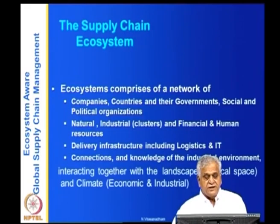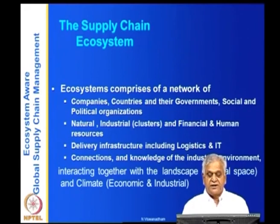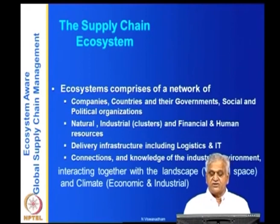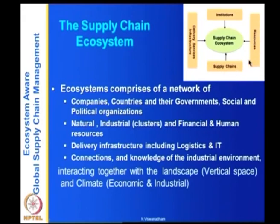The ecosystem is a network of companies and countries and their governments, social and political organizations, natural industrial clusters, financial and human resources, delivery infrastructure including logistics and IT, and also the connections and knowledge of the industry environment interacting together with the landscape and the climate. This supply chain ecosystem presents all four factors: apart from the supply chain and the companies — which involve suppliers, logistics providers, manufacturers, retailers and distributors — there are the resources available for the supply chain: human, financial, industrial, and natural resources.